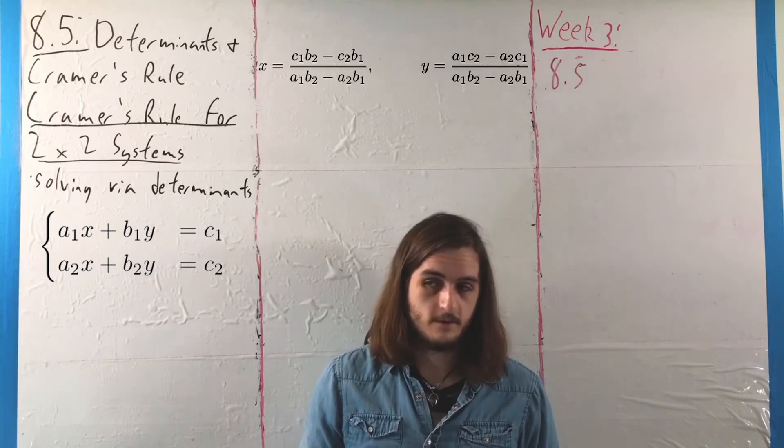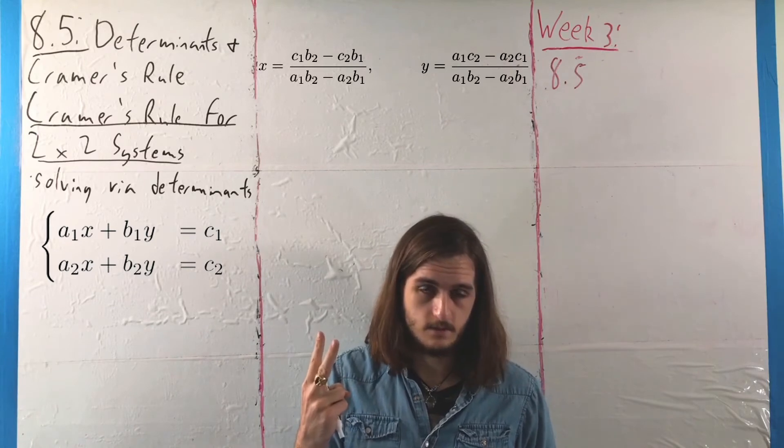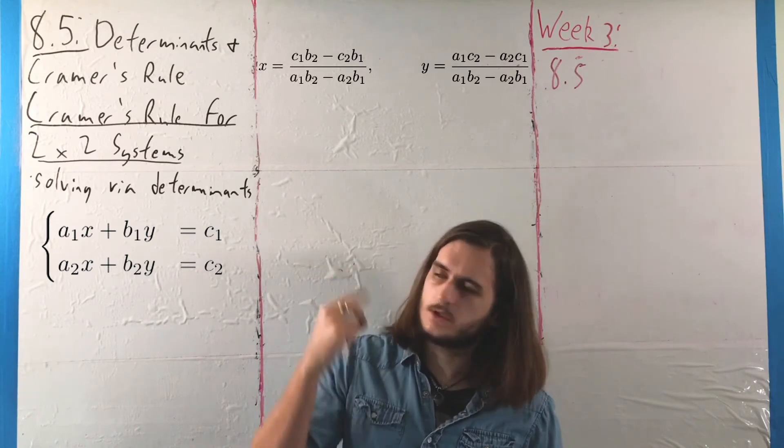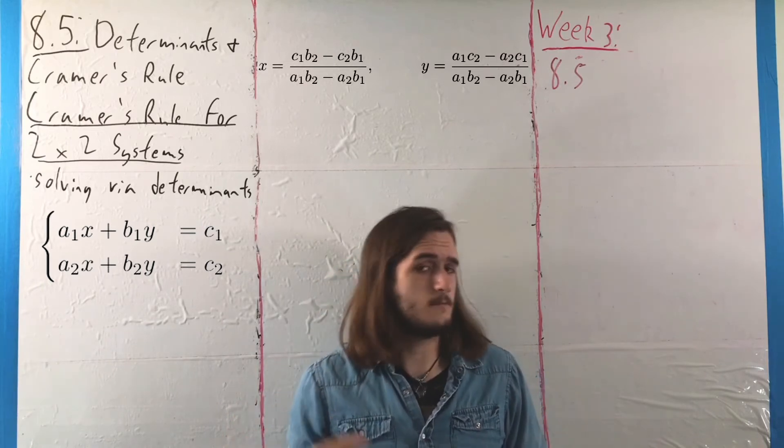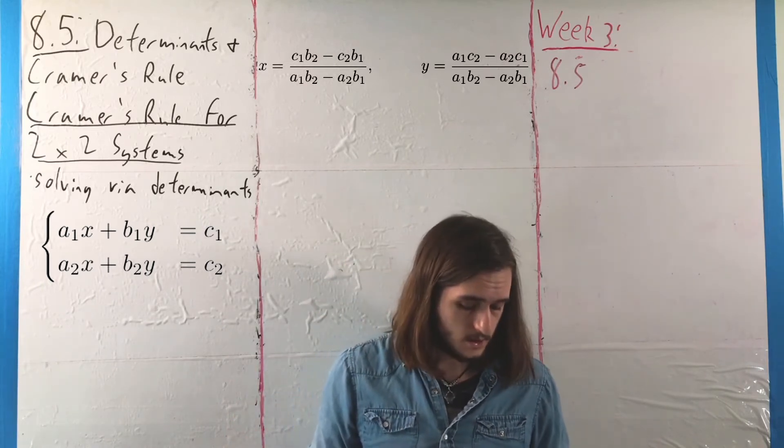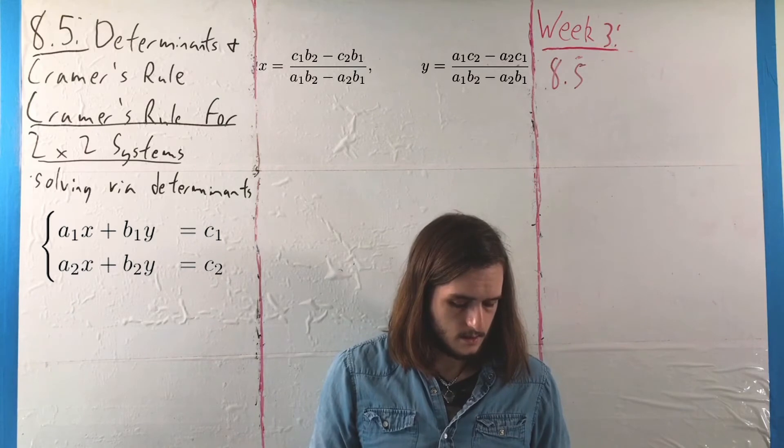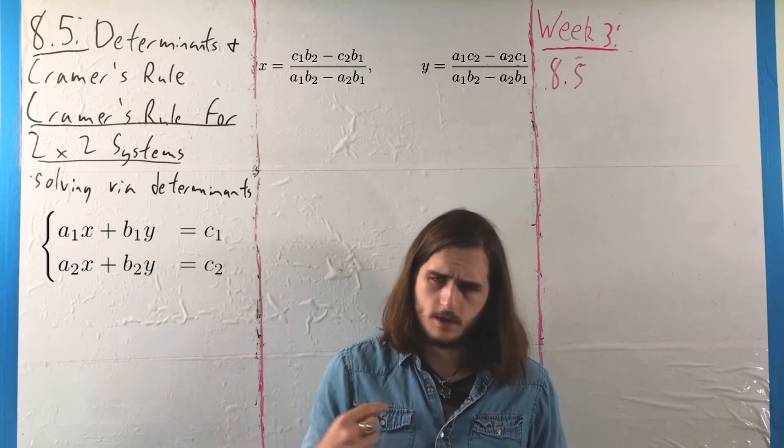And look at that. We have two messes of things now. But pay close attention to those messes of things. Pay close attention to those terms in the numerator and denominator of each, and you should see that if you look at the denominator,